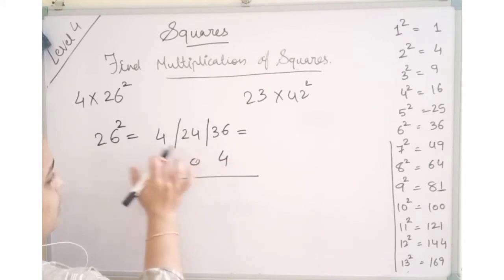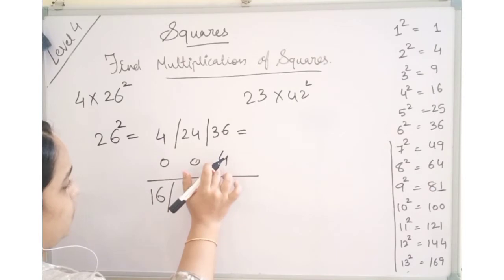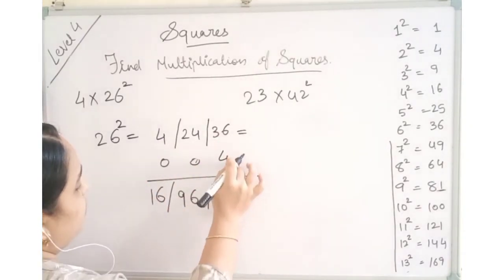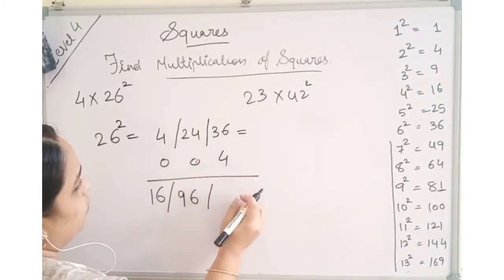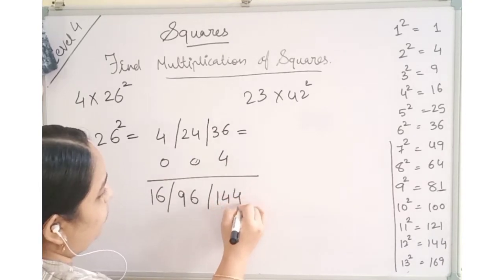6, 6, 4, 4 the 16. 24 fours you have to do, which will give us 96 and 36 fours. Again we will do 6 fours are 24 and 12. So 144.